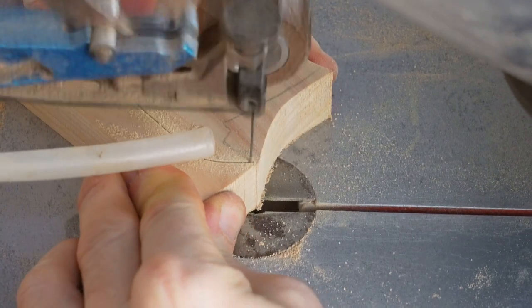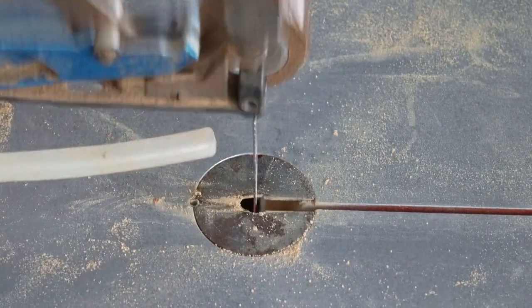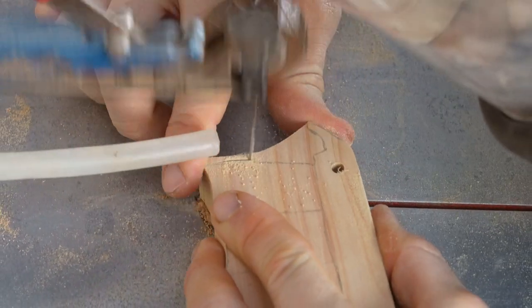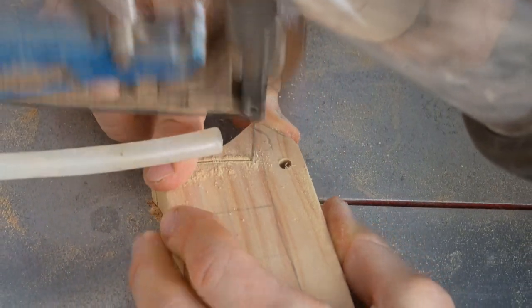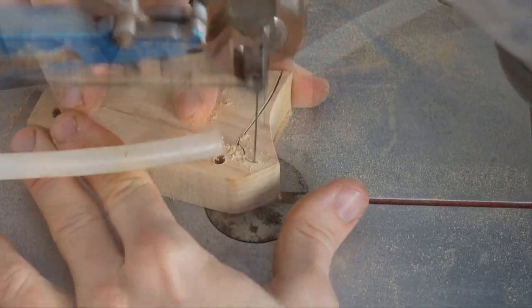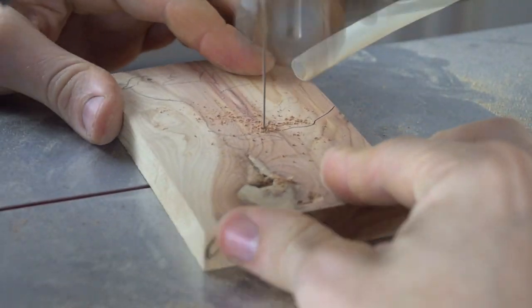A little trick that we use when we're scroll sawing is if you need to produce two identical pieces at the same time, use two thinner pieces of wood, stick them together, or in this case screw them together and then cut them both out at the same time.